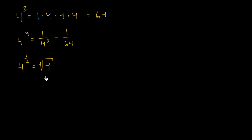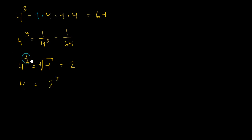What times itself is equal to 4? That's, of course, equal to 2. And just to get a sense of why this starts to work out, remember we could have also written that 4 is equal to 2 squared. So you're starting to see something interesting: 4 to the 1/2 is equal to 2, and 2 squared is equal to 4.